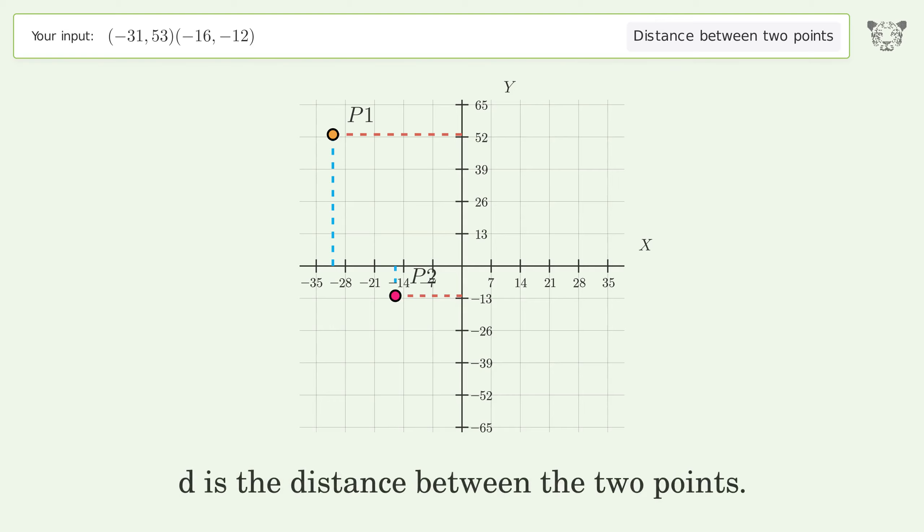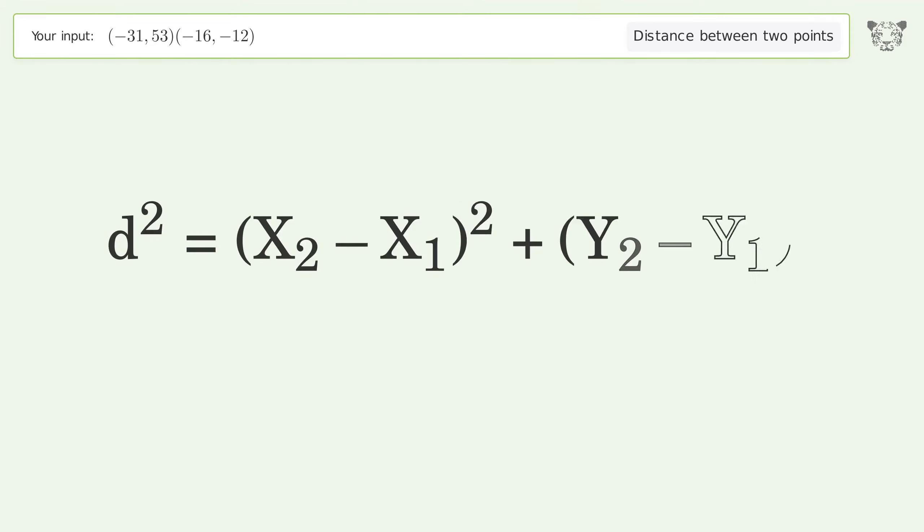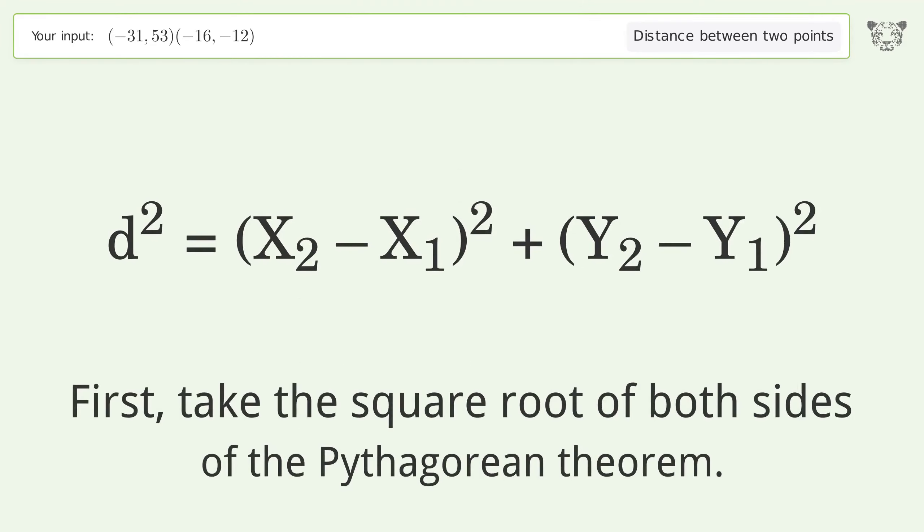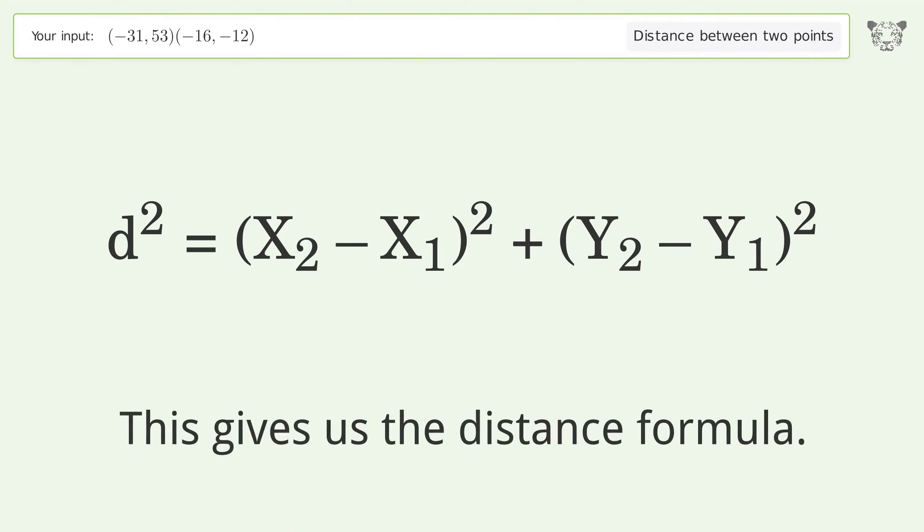d is the distance between the two points. First, take the square root of both sides of the Pythagorean theorem. This gives us the distance formula.